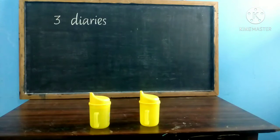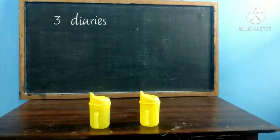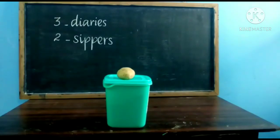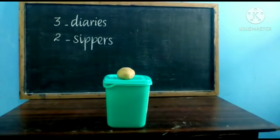Now, how many zippers are there children? 1, 2 — 2 zippers are there, isn't it? So we can write the number 2 like this. First we saw 3 diaries and then we saw 2 zippers.